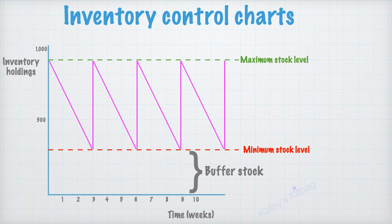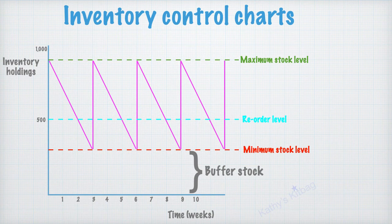So the next thing that you can plot is, you can see my blue line there, the reorder level. So in this particular example, we're assuming that there's going to be a reorder level of 500 units.